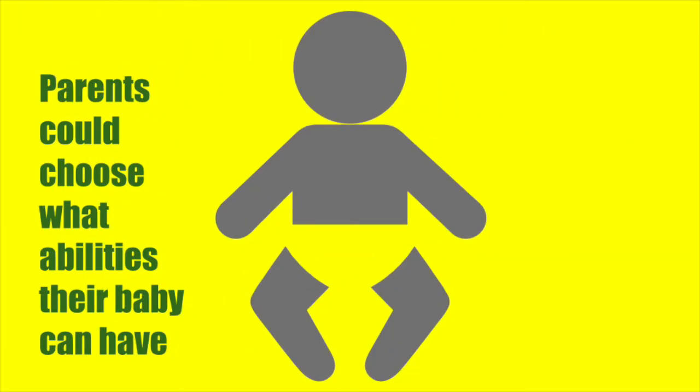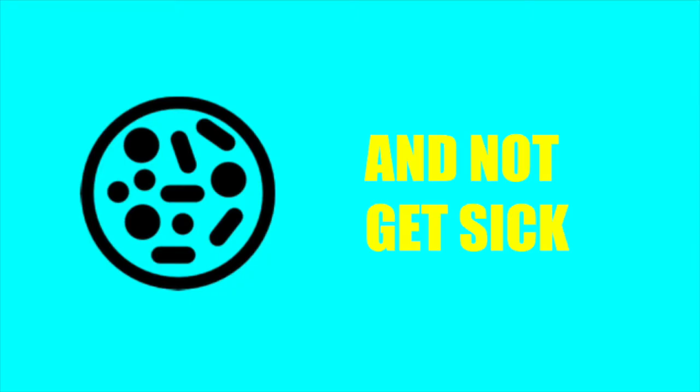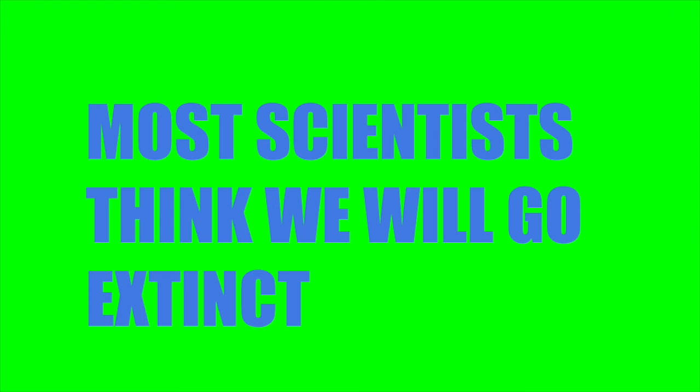Parents could choose what abilities their kids can have. They can be really strong, they can be really smart like a search engine, and we can be resistant from some sicknesses. But unfortunately, most scientists think we'll go extinct.